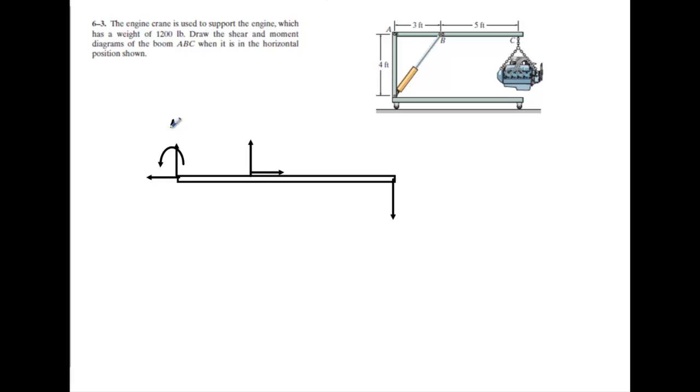So we'll call this F_A_Y. We'll call this F_A_X. We'll call this F_B_Y, and F_A_X. All right, we have 1,200 pounds coming down.